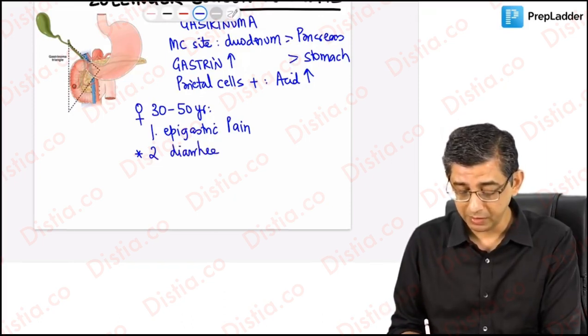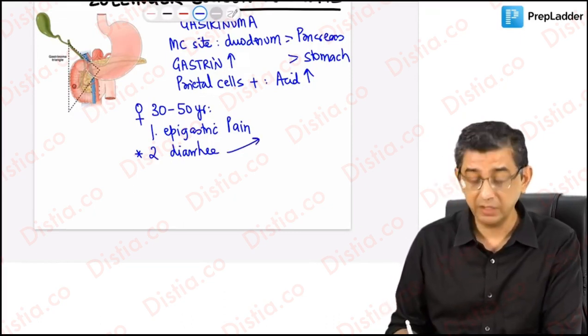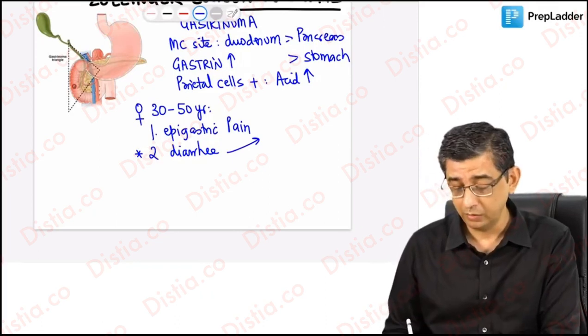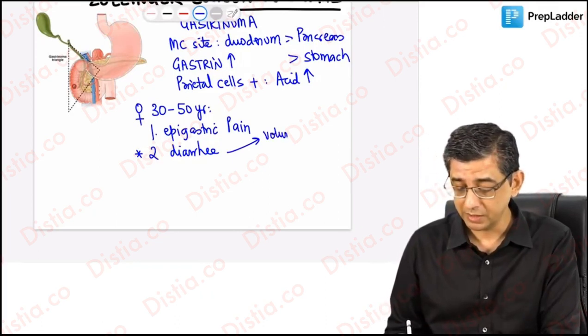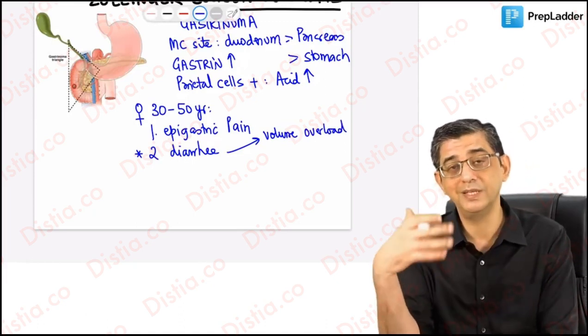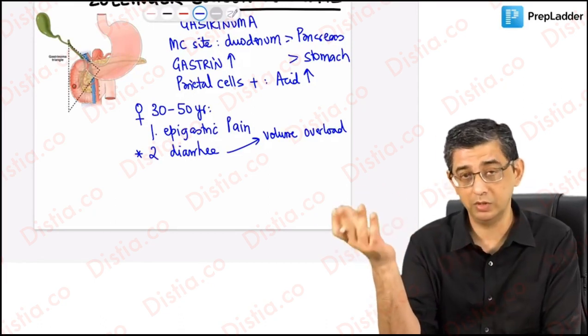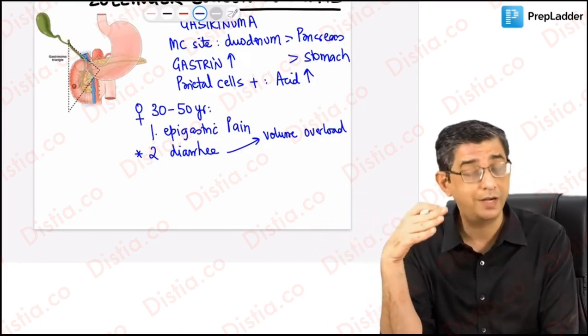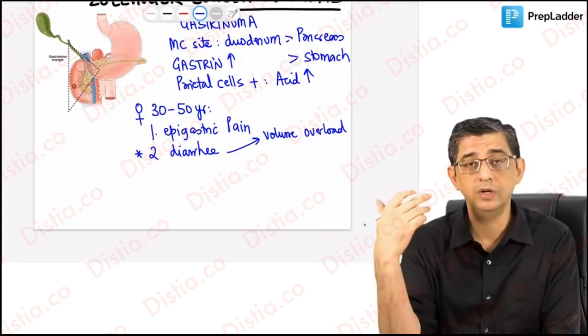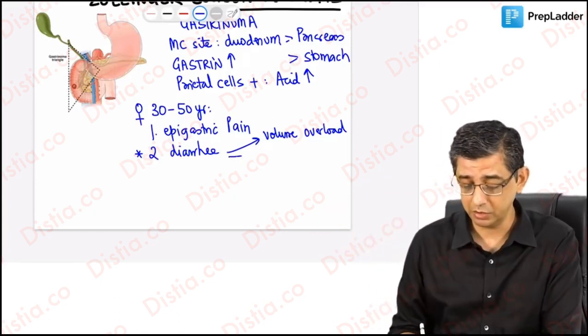Now when I describe this, the usual query is why would we be having diarrhea in Zollinger-Ellison syndrome? One reason is that there is more acid production. The amount of secretions produced in the GI tract is more. So if secretions are more, I can put the word volume overload. The total GI secretions are more.